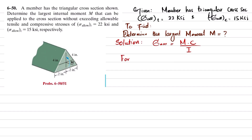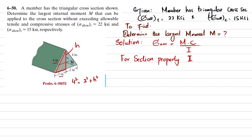For section properties, we need the location of the neutral axis from the base. The triangle has a half-base of 2 inches and a side of 4 inches. By the Pythagorean theorem: 4² = 2² + h², so h² = 16 − 4 = 12, giving h = √12 = 3.46 inches.